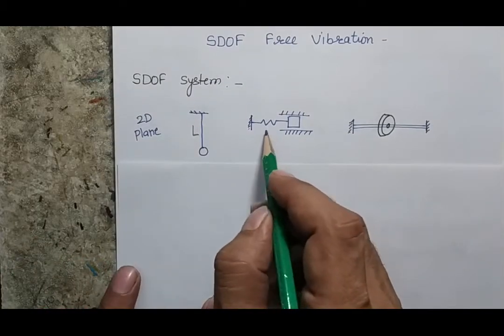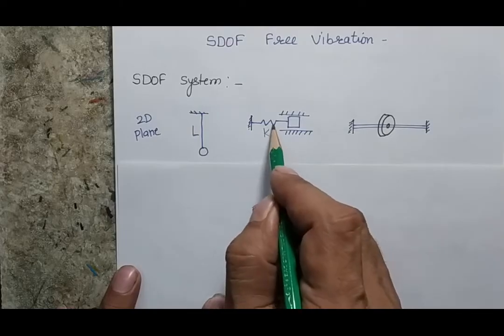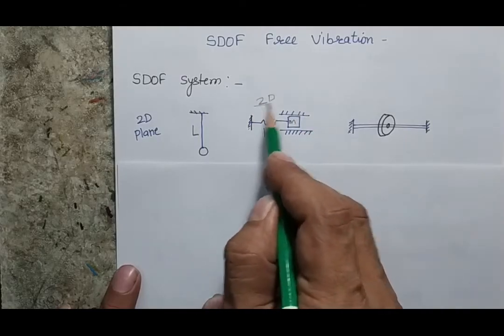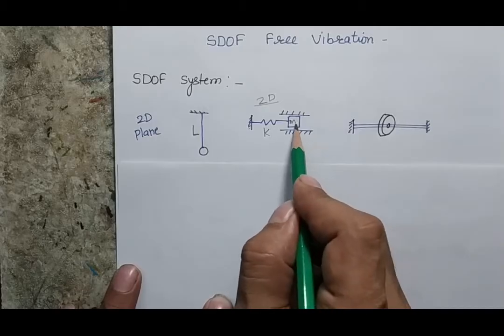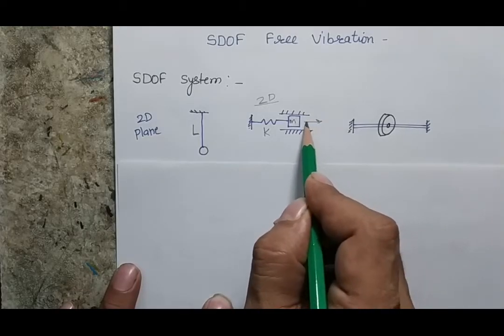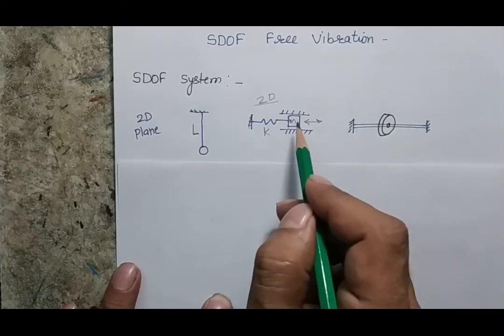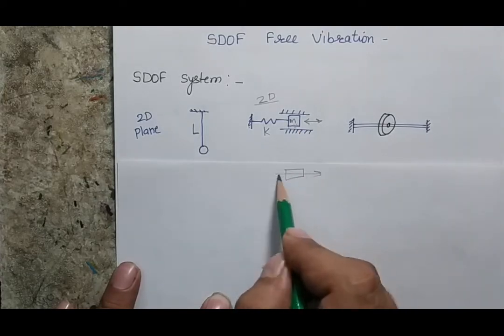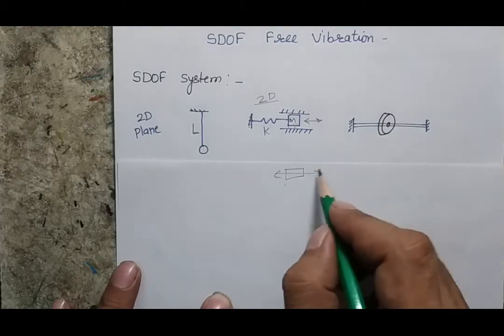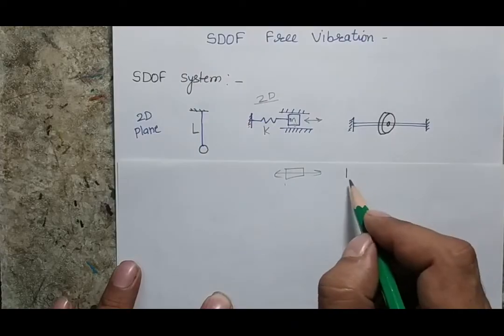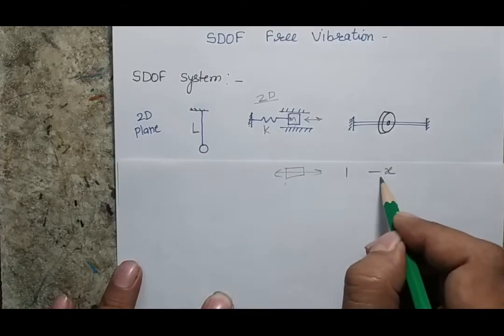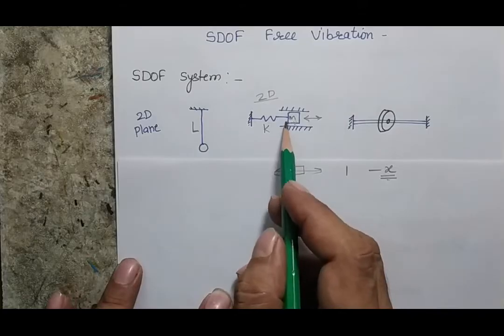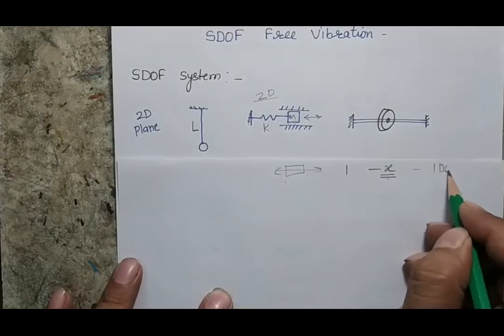I will start with the middle example where there is a spring connected with one mass m. This is a planar system, meaning I am talking about two-dimensional space. In this case the mass can move only in the horizontal forward and backward direction. If I give a certain displacement to this mass it will oscillate only in the horizontal direction — the degree of freedom is only one, which is the motion along the x direction.